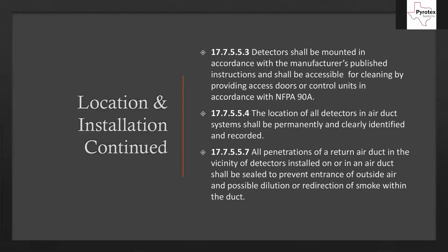A few more code requirements for duct detectors: detectors shall be mounted in accordance with the manufacturer's published instructions and shall be accessible for cleaning, by providing access doors or control units in accordance with NFPA 90A. We must ensure duct detectors are somewhere accessible — if it's a sheetrock ceiling, we may need to coordinate placement of an access hatch so the unit can be serviced.